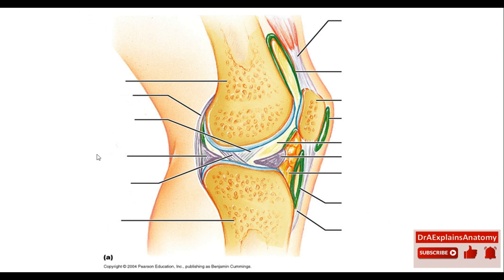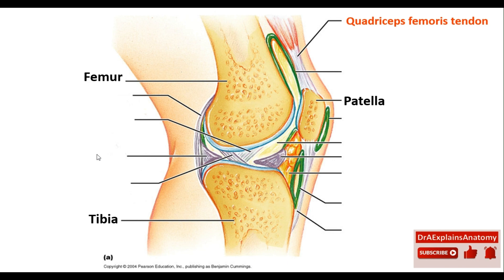Moving to the anatomy of the knee joint. This is the femur. This is the tibia bone. This is the patella — so these are the three bones. Moving to the tendon of the muscle: this is the quadriceps femoris tendon, and this is the patellar ligament. Don't confuse a tendon with a ligament — a tendon connects the muscle to the bone. This right here is the joint cavity.